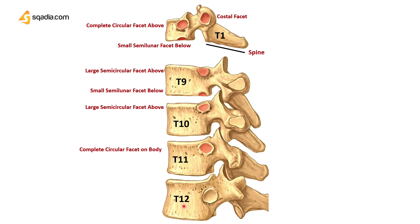In the 12th thoracic vertebra, the costal facet is complete and has reached almost the middle of the body. There is no facet on the transverse processes, and the transverse process has regressed. Inferior articular processes of lumbar type are present, and the spine has become horizontal. These are the atypical features of the 12th thoracic vertebra.